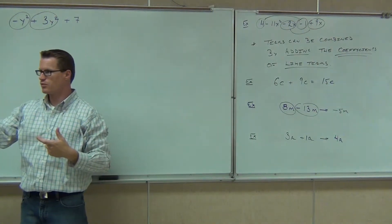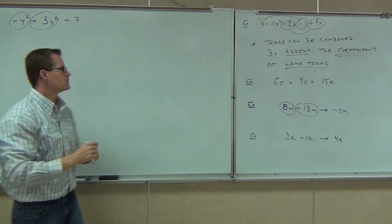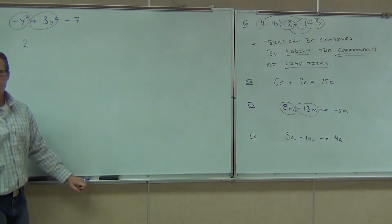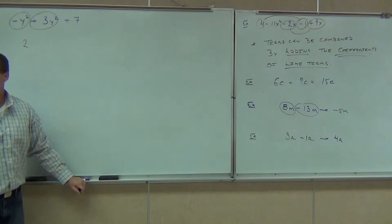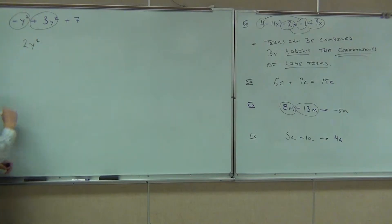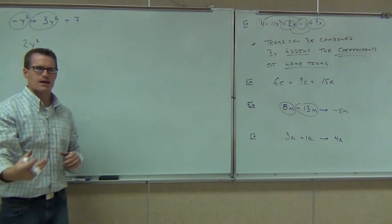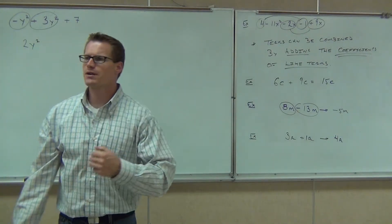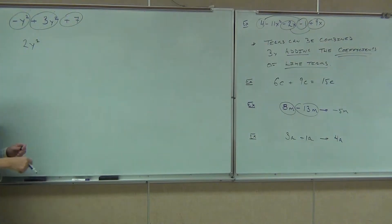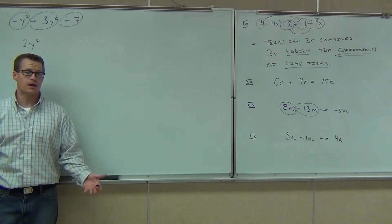Two y squared — that's right. The addition rule says negative one, positive three. Combine them, you get positive two. So positive two y squared. The variable part doesn't change — it stays the same. And since you circle them, once you combine them, just cross them off the list so you don't keep having that over and over again. Then we look for any other like terms. The next term we see is a plus seven. Are there any like terms with plus seven? In fact, it's the only term left. So what do we do with that? Bring it down.